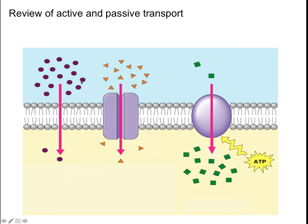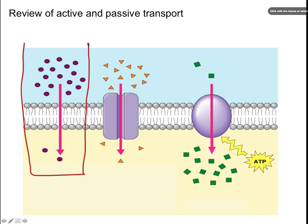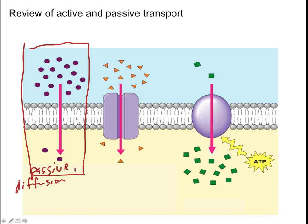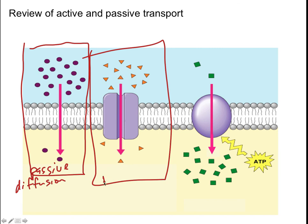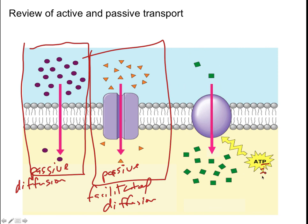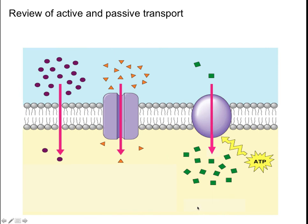Let's look at this diagram. Is this active transport or passive transport? We're going from high to low, so that has to be passive. And what kind of passive is it? There's no protein, so it must just be regular diffusion. Here's another one — we're going from high concentration to low concentration, so that's passive, but now we have a protein, so it's facilitated diffusion. And last one: we're going from low to high and using ATP, so that's active transport.